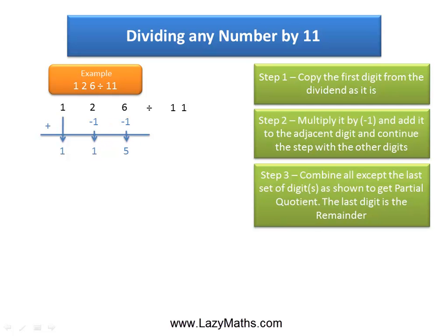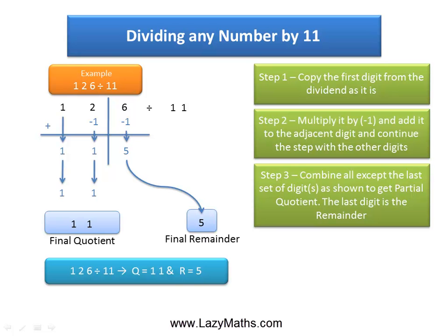Now, except for the last sum, which is 5, the remaining 1 and 1 become the quotient and the last sum becomes the remainder. So we get the final answer. 126 divided by 11 is quotient 11 and remainder 5.